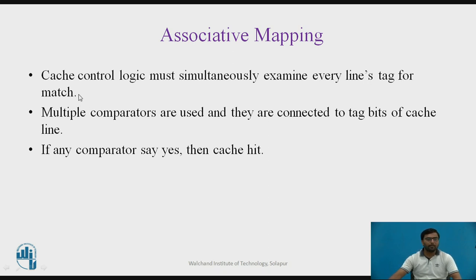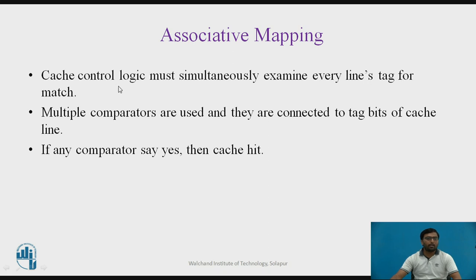In associative mapping, the cache control logic must simultaneously examine every cache line's tag for a match. Because any block of main memory can be mapped to any line of cache memory, if the processor requests any block from main memory, it needs to check all lines of the cache. In the previous direct mapping method, there was no need to search all lines because mapping was done in a round-robin fashion — for example, blocks 0, 4, 8, and 12 would directly go to the 0th cache line.